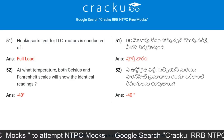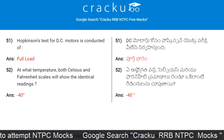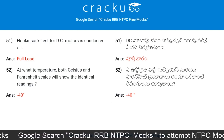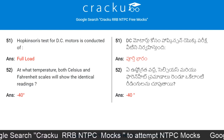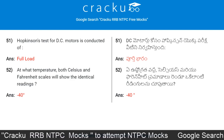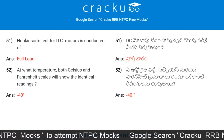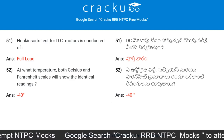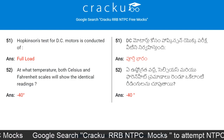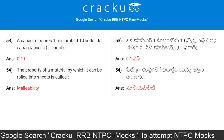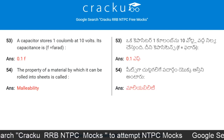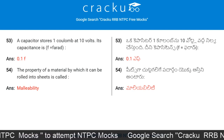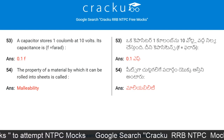Hopkinson's test for DC motors is conducted at full load. At what temperature do both Celsius and Fahrenheit scales show identical readings? At −40 degrees. A capacitor stores one coulomb at 10 volts; its capacitance is 0.1 farads.